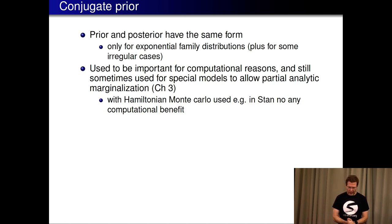The first one conjugate prior. This means that the prior and posterior have the same form. This works only for exponential family distributions plus some irregular cases so this is not always available. This used to be important for computational reasons and that's also why the Bayesian data analysis book also in chapters 2 and 3 uses these conjugate priors for these simple models.